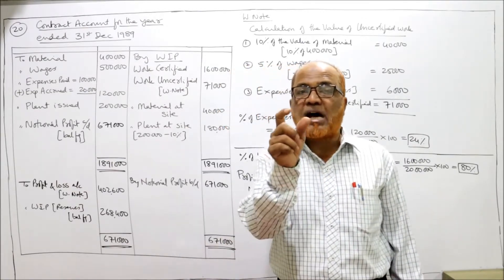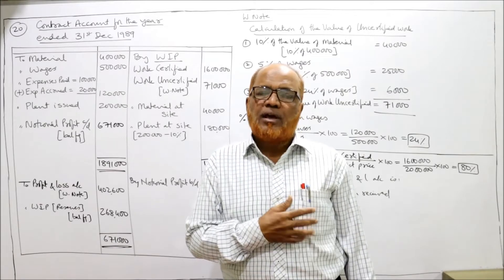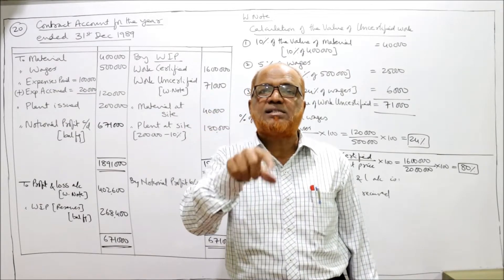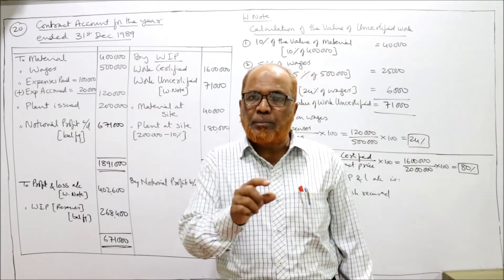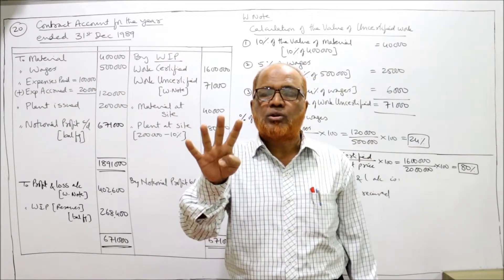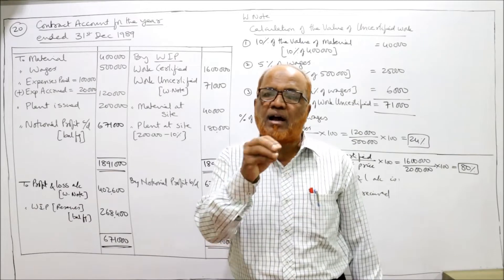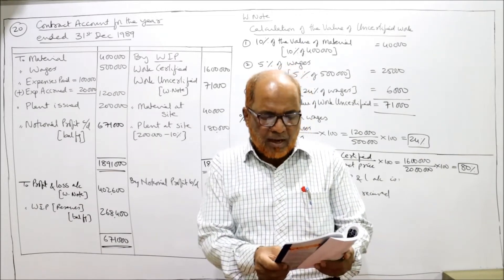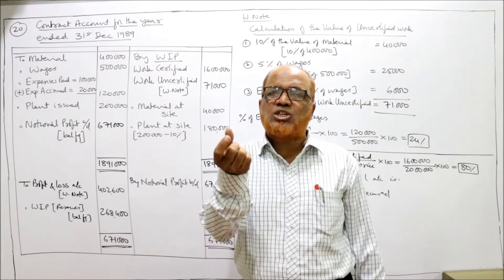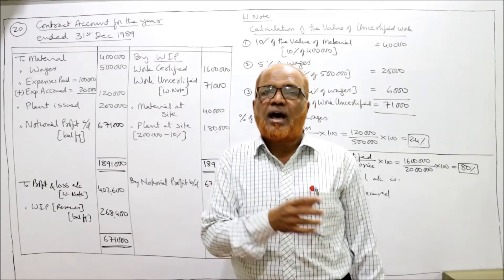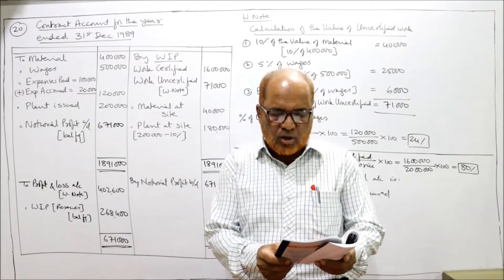Not yet certified means uncertified. In this problem, the value of uncertified work is not given — we have to calculate it in a working note. As given in the problem, take 10% of material issued: material is 4 lakh, so 10% is 40,000. Take 5% of wages: wages are 5 lakh, so 5% is 25,000. Expenses are charged as a percentage of direct wages. Ignore depreciation on the uncertified portion of work.